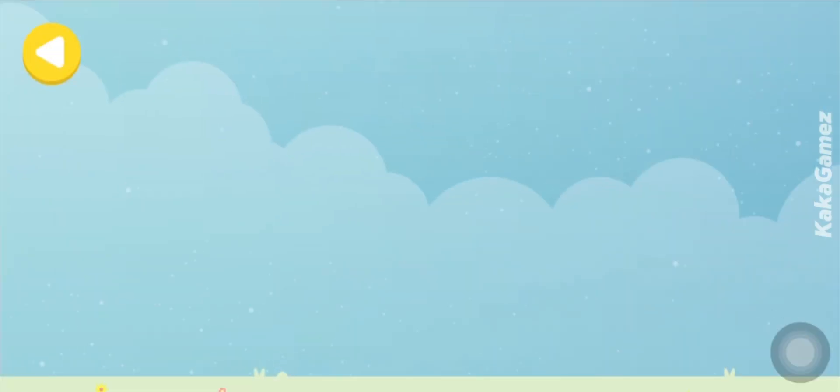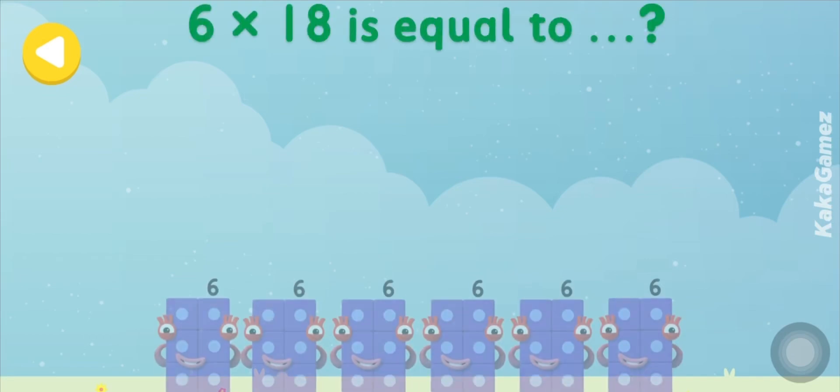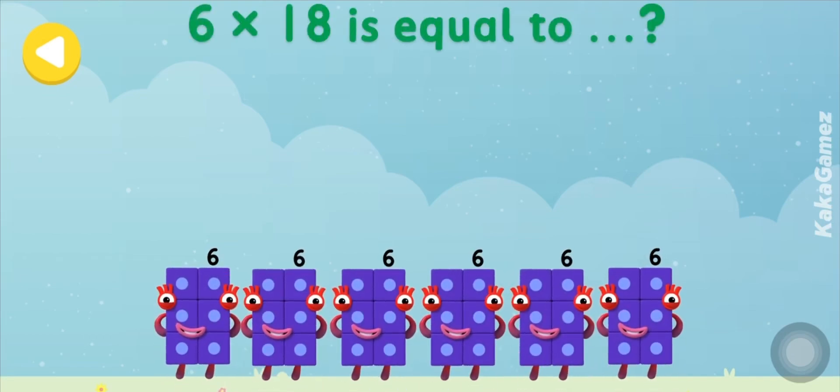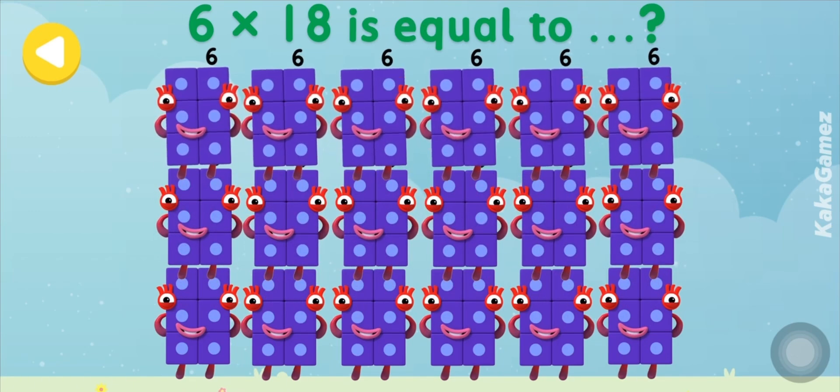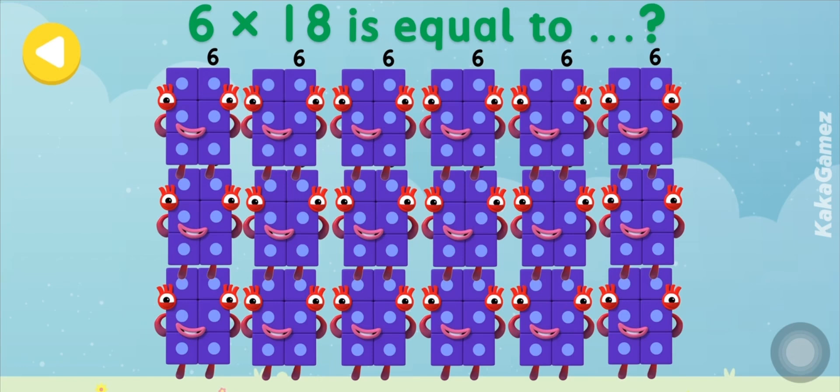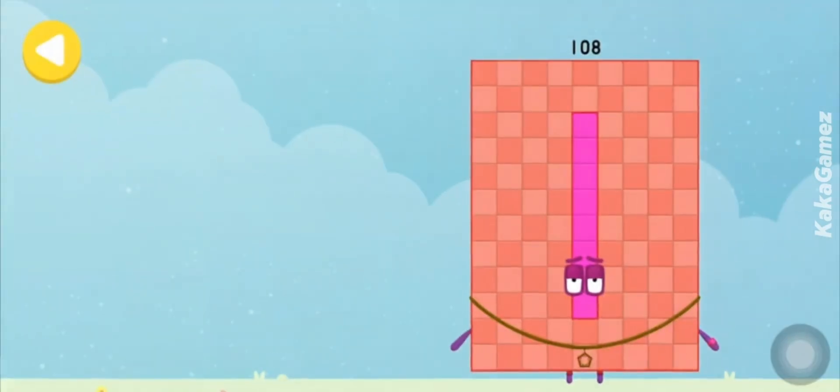Now, what is 6 times 18 equal to? Spot on! 6 times 18 equals 108! 18 groups of 6 blocks give you a total of 108 blocks! Yay!